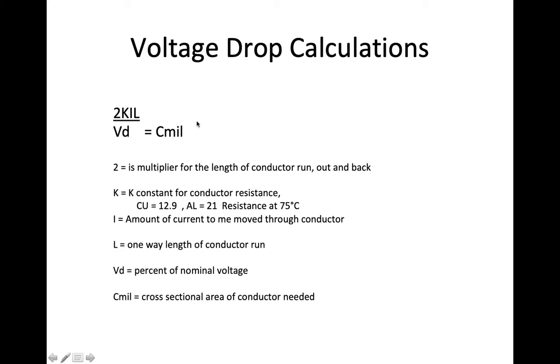Looking at the formula, 2 is the multiplier for the length of the conductor run, out and back. So I'm going to measure the distance one way, out, but this 2 is going to take care of the additional run coming back. K is the K constant for the conductor. Copper K constant is going to be 12.9. Aluminum is going to be 21. And this is at 75 degrees C.